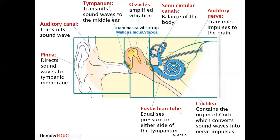The Eustachian tube is very important in equalizing the pressure on either side of the tympanic membrane. If there is high pressure on one side and low pressure on the other, the Eustachian tube equalizes the pressure so there is no rupturing of the tympanic membrane. If pressure on one side is greater than the other, it might cause the tympanic membrane to rupture, so the Eustachian tube protects it by equalizing pressure.